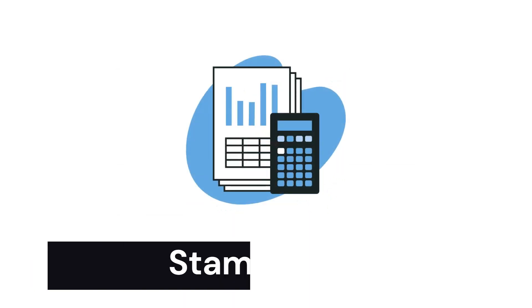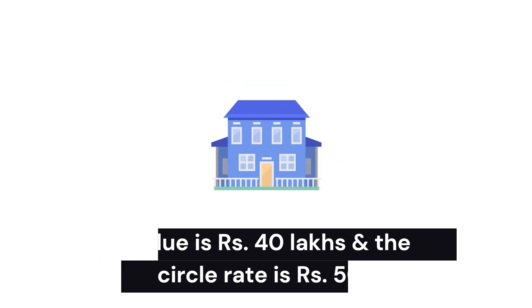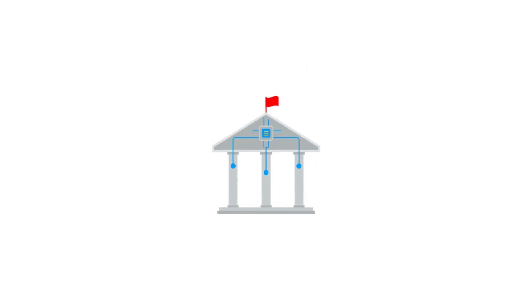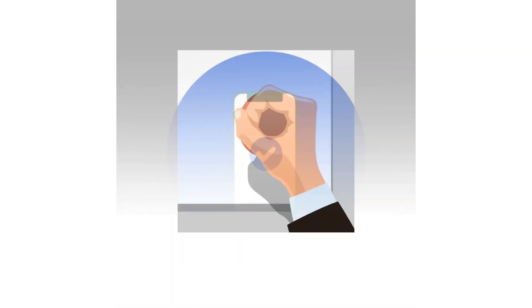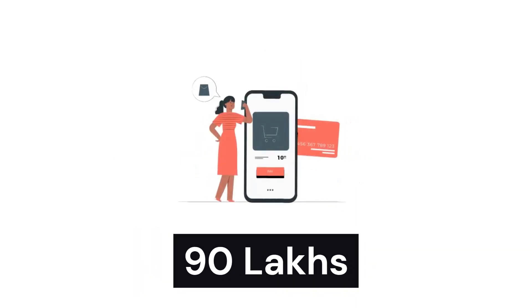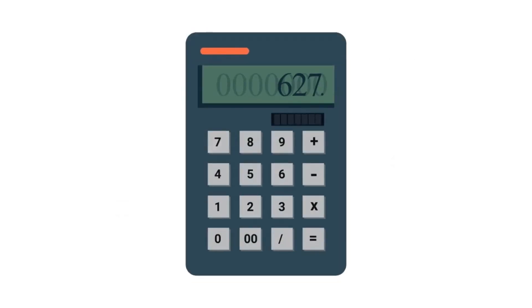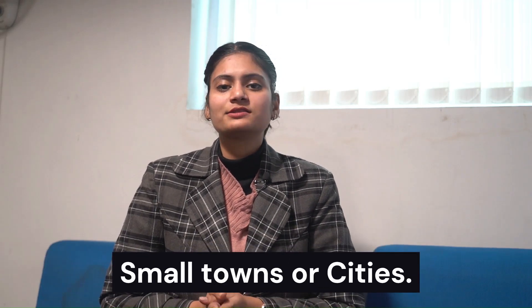Here is an example of stamp duty calculations. If the actual sale price is higher than the circle rate — for example, if you bought your property for Rs. 90 lakhs and the circle rate is Rs. 80 lakhs — then the market value is Rs. 90 lakhs, so you have to pay stamp duty on Rs. 90 lakhs. You can also estimate stamp duty online, as it varies by location — stamp duty is higher in large cities compared to small towns.